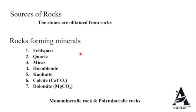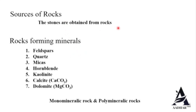The stones are obtained from rocks. A rock represents a definite portion of the earth's surface; it is not homogeneous and has no definite chemical composition or shape. Rocks contain many minerals. Various natural minerals have a wide range of characteristics, but only a few form the bulk of rocks. These are called rock-forming minerals: feldspars, quartz, micas, hornblende, kaolinite, calcite, and dolomite.